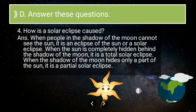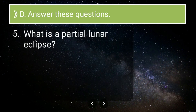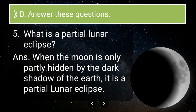Fifth long answer: what is a partial lunar eclipse? When the Moon is only partially hidden by the dark shadow of the Earth, it is called a partial lunar eclipse. It is the shadow of the Earth that causes a lunar eclipse, and when the Moon is only partially hidden, it is called a partial lunar eclipse.